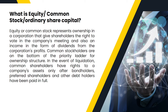Based on your ownership, you are entitled to receive dividends — that is, a portion of the company's profit — and you will also have voting rights. Common stockholders are at the bottom of the priority ladder of the ownership structure. At liquidation, bondholders, preference shareholders, and other debt holders are paid first before equity shareholders.